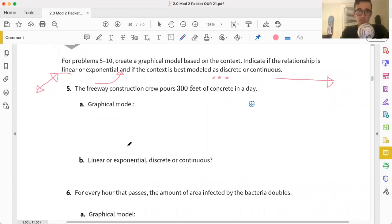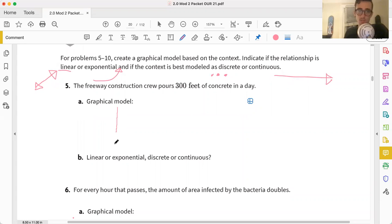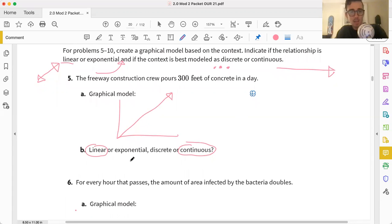So the freeway construction crew pours 300 feet of concrete in a day. Okay. Well, it's probably going to be a pretty consistent amount that starts small, maybe at one foot and then two foot and three foot and maybe some fractions of a foot in there. So as time goes on, it's eventually going to be all done and it's going to be pretty consistent with how they work. I'm going to say that this is continuous because we can have fractions of a foot. And I'm going to say that this is linear unless they start drinking Red Bull or monster or a five hour energy. I think they're going to be working at the same pace, the construction crew. So I think that's all I have to say about that.